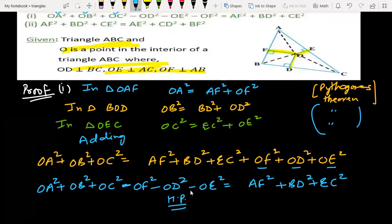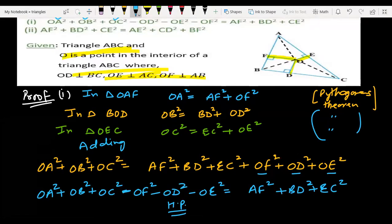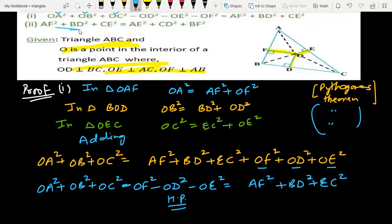Now we will do the second part. In second part, we will do according to what we have proved, or we can do it from the beginning. I think our second part is coming, so we need AF, BD and CE. I will erase this because we need to see the figure once again.